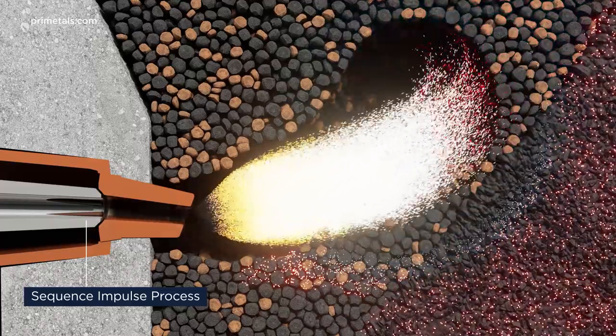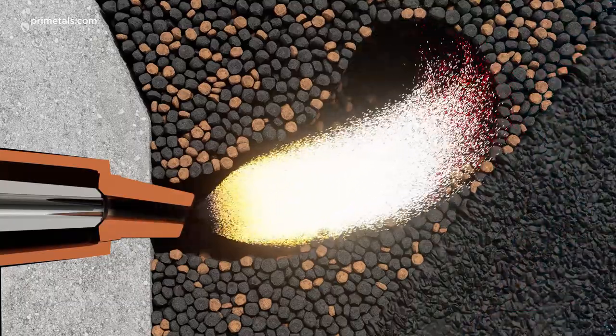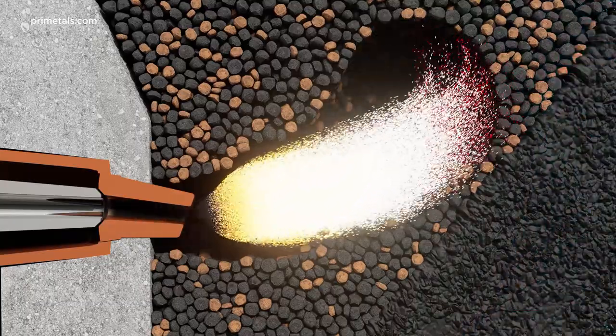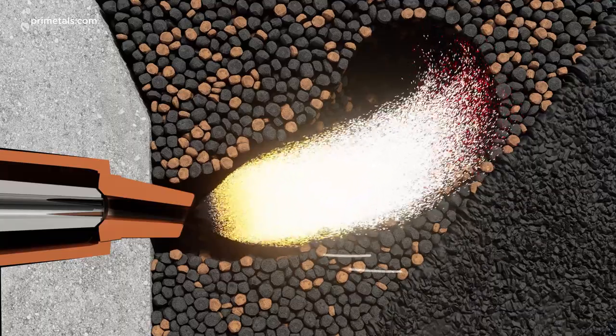The pulses penetrate deep into the raceway, ensuring better combustion of injected coal in the fine char deposits, increasing the permeability of the dead man. This enables reducing gases to penetrate towards the center of the furnace.